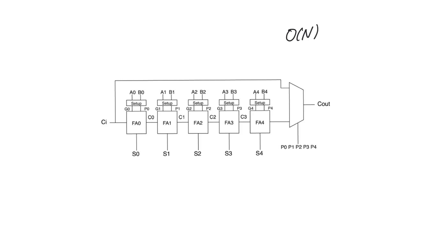The carry bypass adder would not be possible without the generate-propagate logic we just discussed. It makes a very simple observation: if we have a 5-bit adder, the final carry out does not actually have to be calculated if every bit position within the adder is propagating. Carry out equals carry in when all bits propagate, and a multiplexer chooses the upper bypass branch when all propagates equal one.